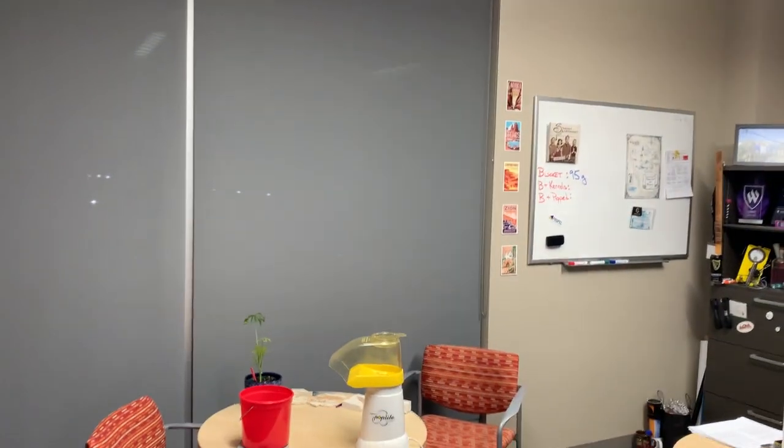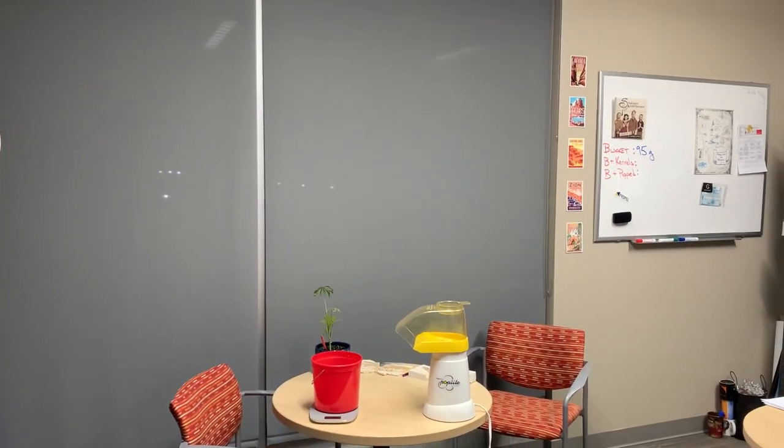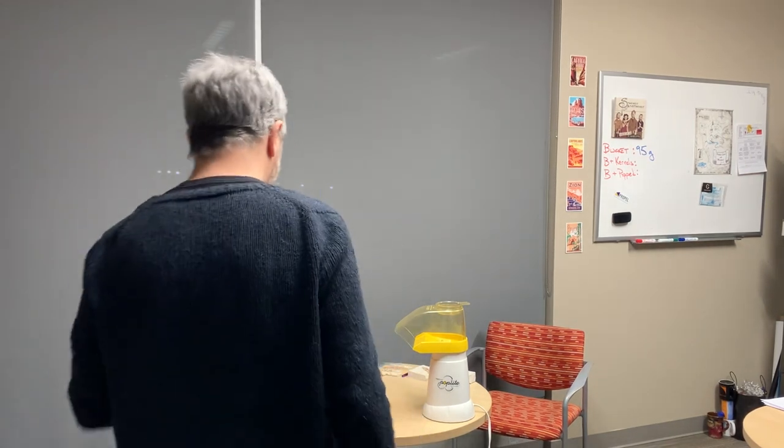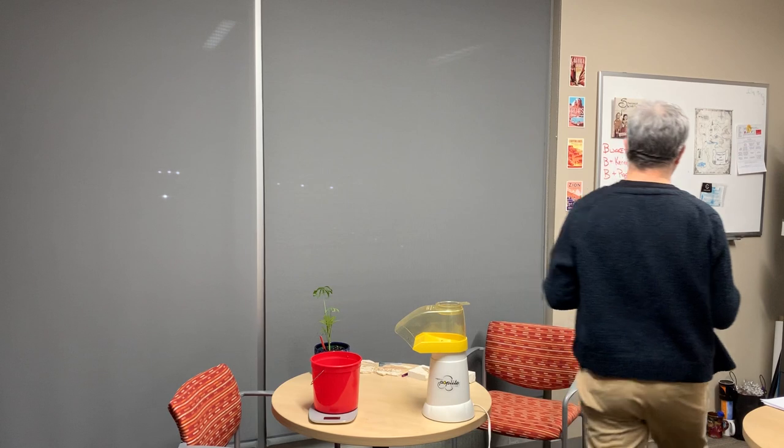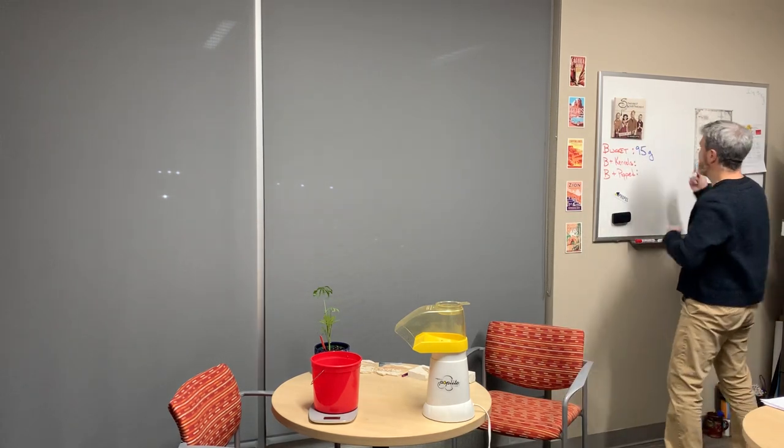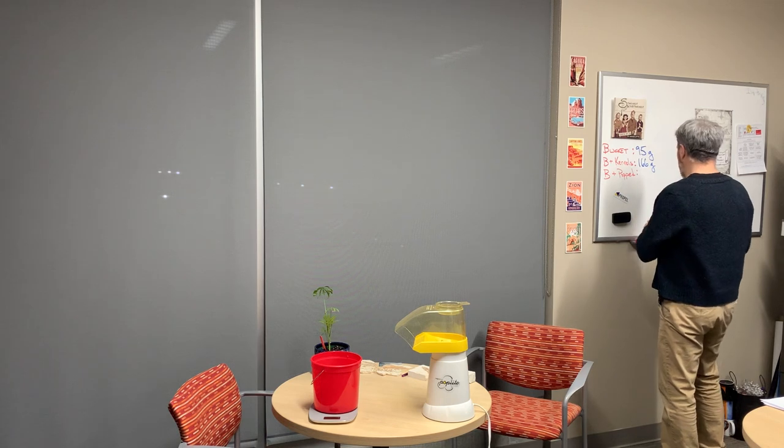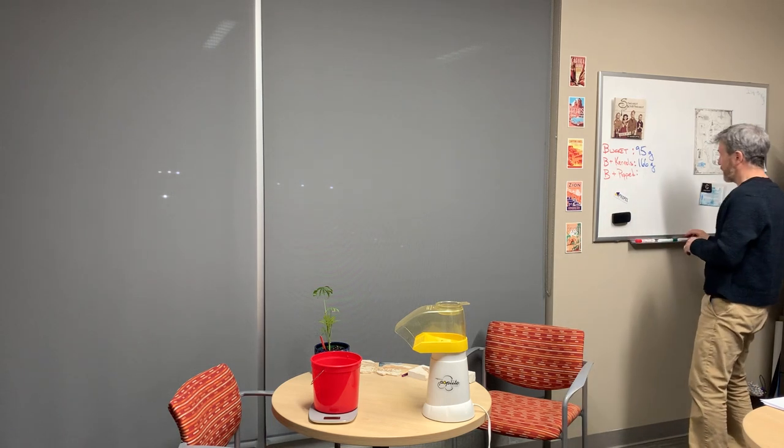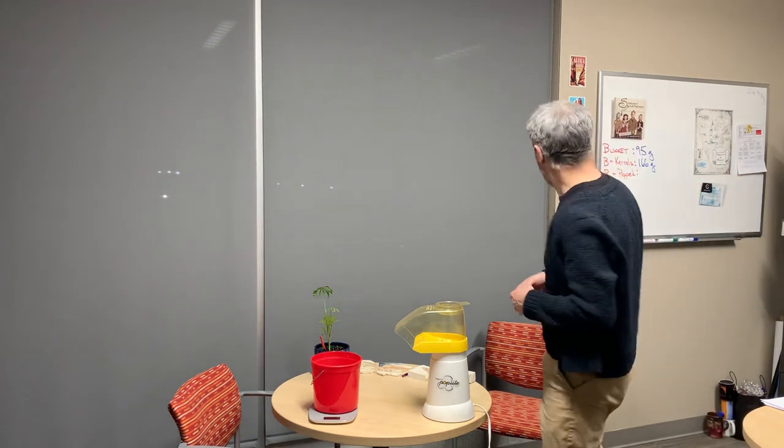That's good. That means my kernels must mass out to be 166 minus 95. Well, that would be 66 and 5, which would be 71 grams. 71 grams of kernels.